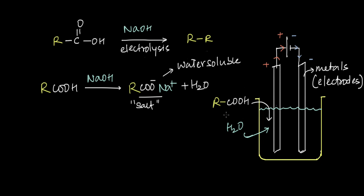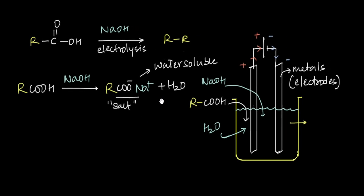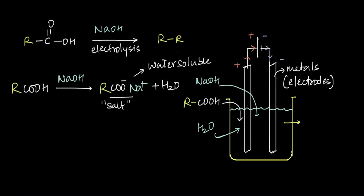So we take our acid and add base to it. Ultimately, what we are left with in our solution is loads of carboxylate ions (RCOO⁻), along with loads of Na⁺ ions and plenty of water.